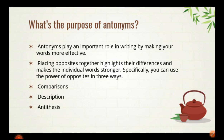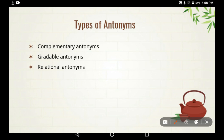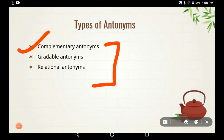Now we will talk about the types of antonyms. There are three important types: the first is complementary, the second is gradable, and the third is relational.